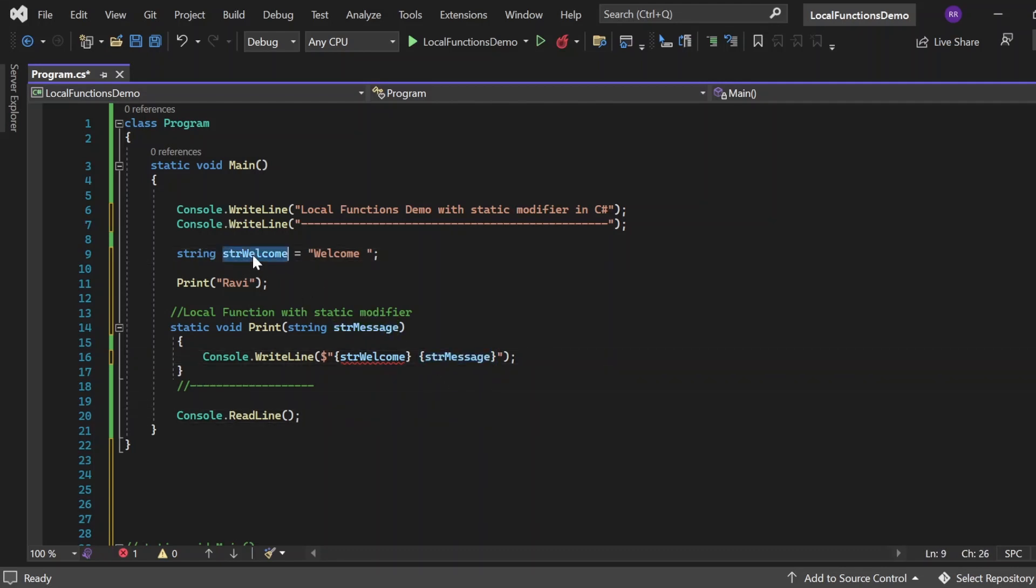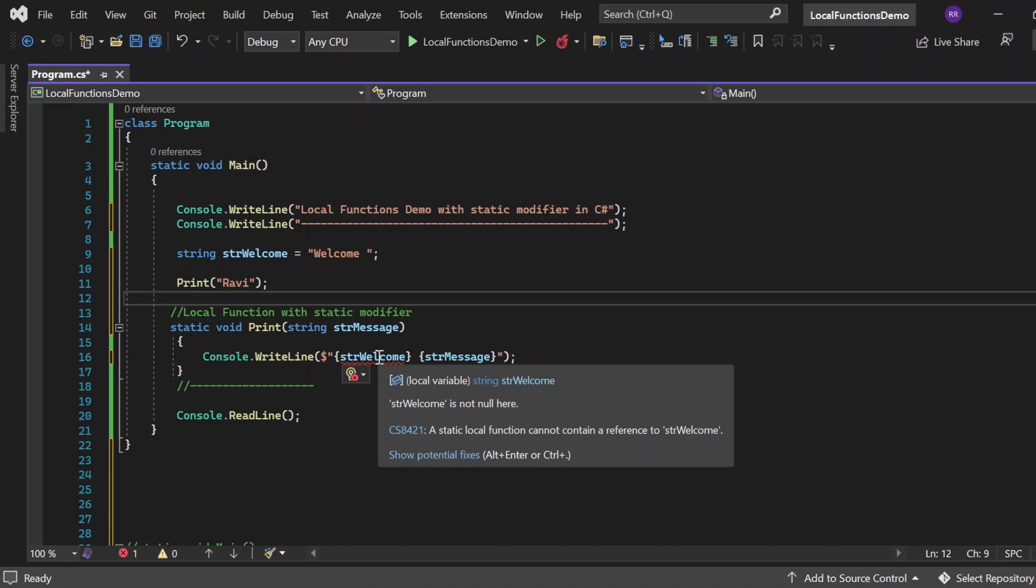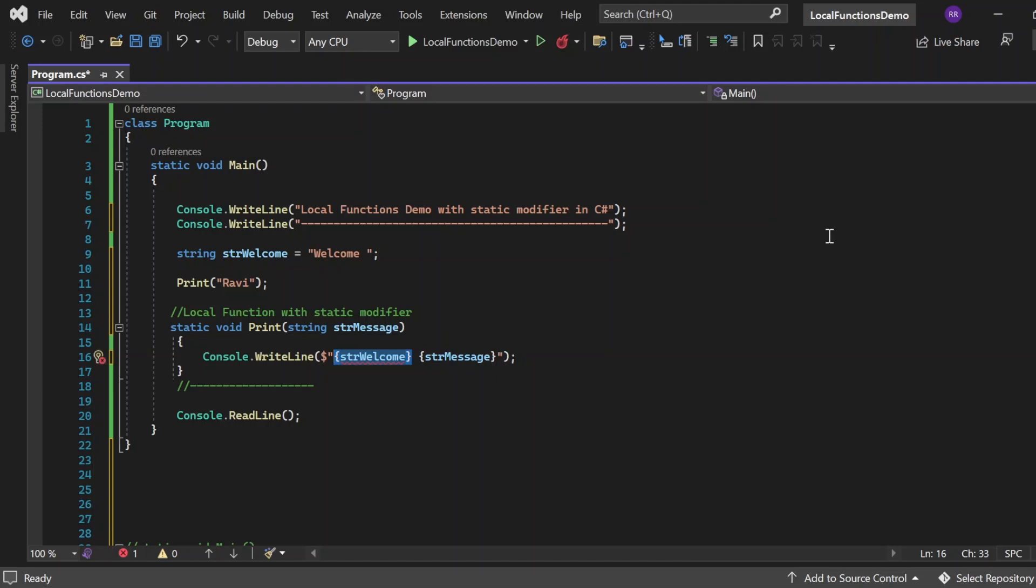If you notice in the console.WriteLine statement, whatever parameter value we're receiving we're printing, which looks okay. But when I try to use an outside variable, which is str welcome, it's giving me a red underlined sign. When I hover over it, it shows the message: a static local function cannot contain a reference to str welcome. This basically tells us we cannot use outside variables inside a static local function.